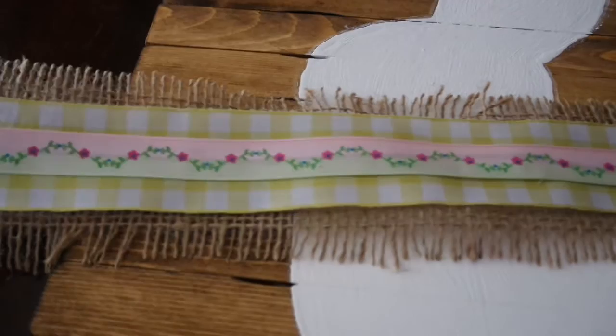Now as far as the bow around its neck, all I did was take some scrap burlap, layered three pieces on top of each other, the green plaid and some floral, just hot glued it. That's all it is to it. I'm going to make it into a bow and hot glue it on its neck.